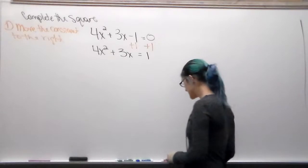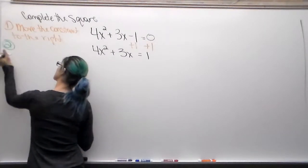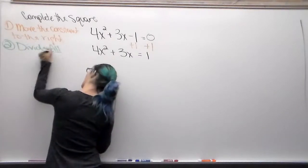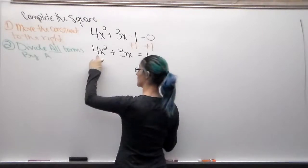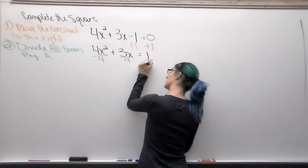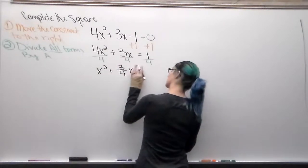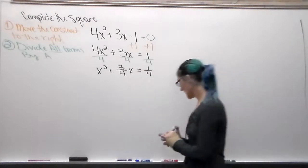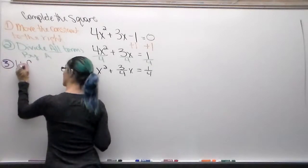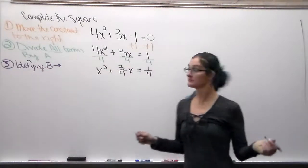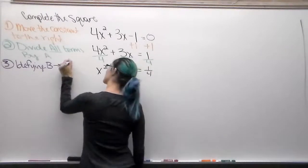Step 2: we are going to divide all terms by a. So a is 4 — whatever number is in front of x². Dividing everything by 4 is going to give us x² + (3/4)x = 1/4. Step 3 is where it gets really weird. We start by identifying b. Our b is now a fraction — b = 3/4 — and that's what makes this one a lot more complicated than the ones without fractions.